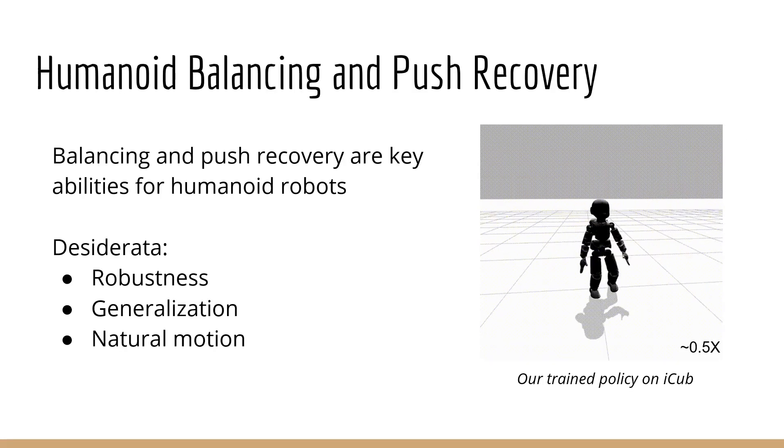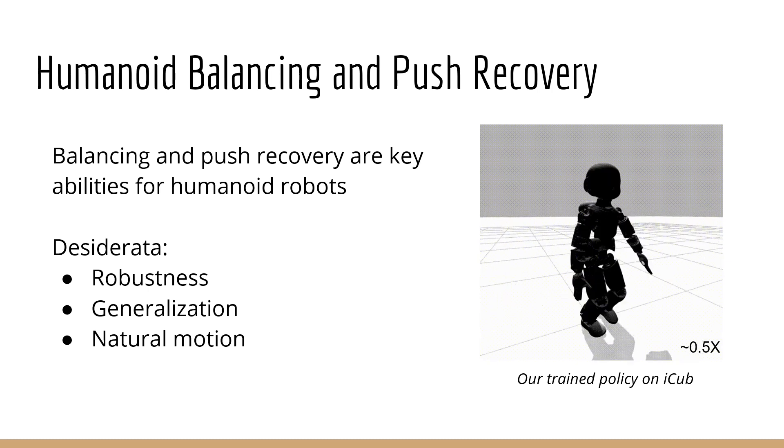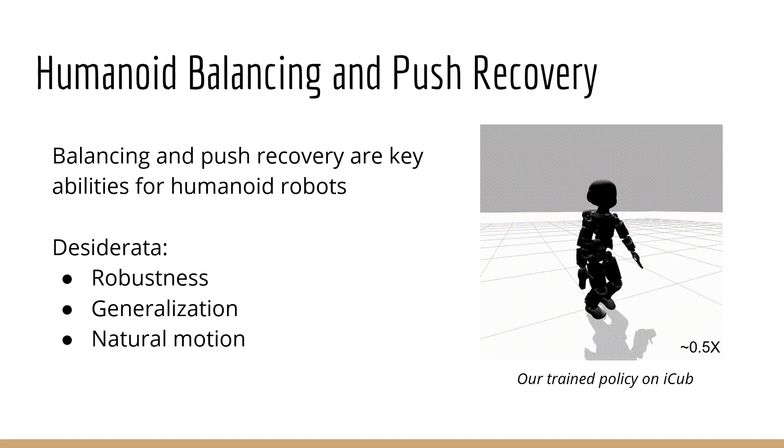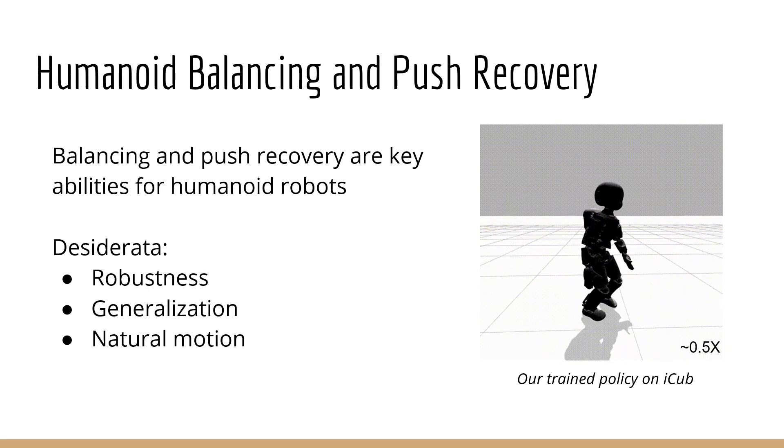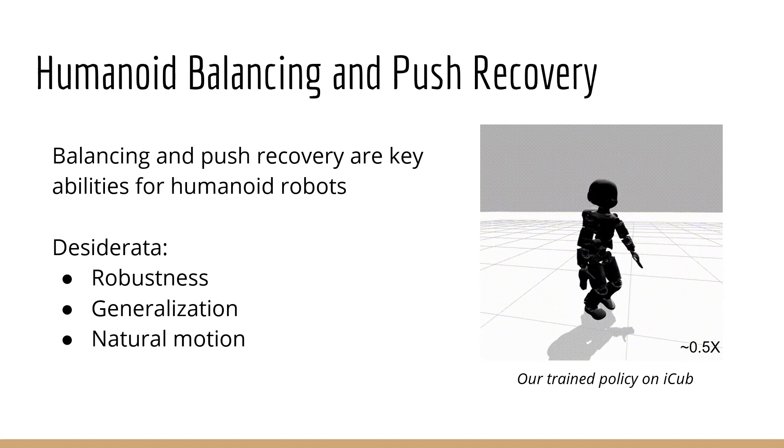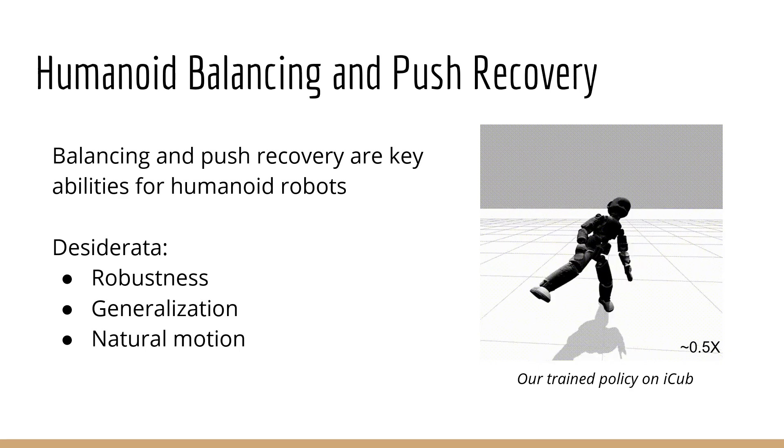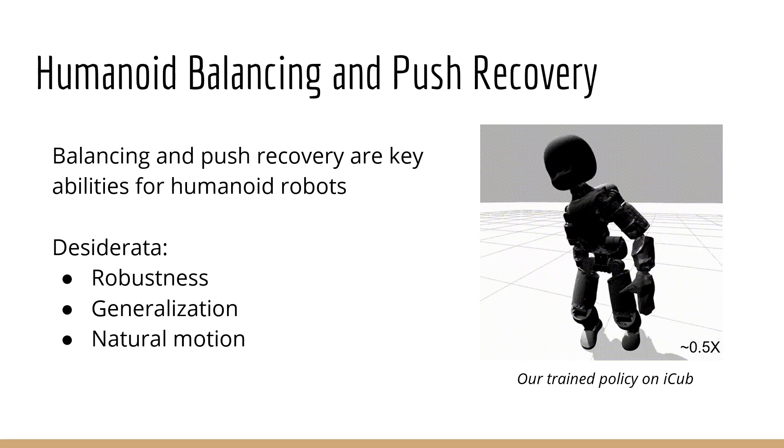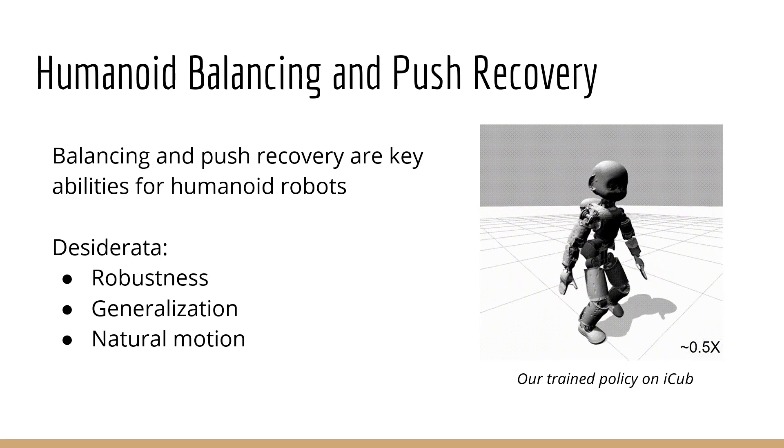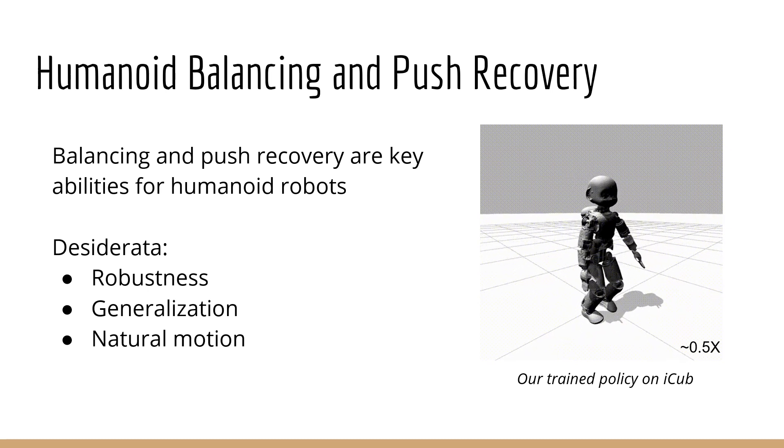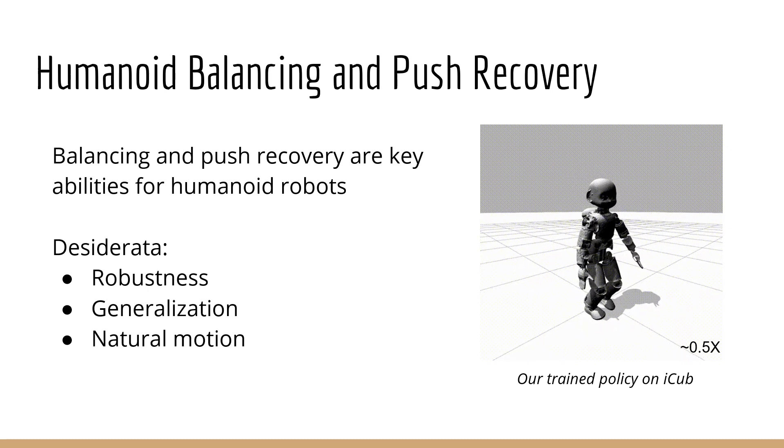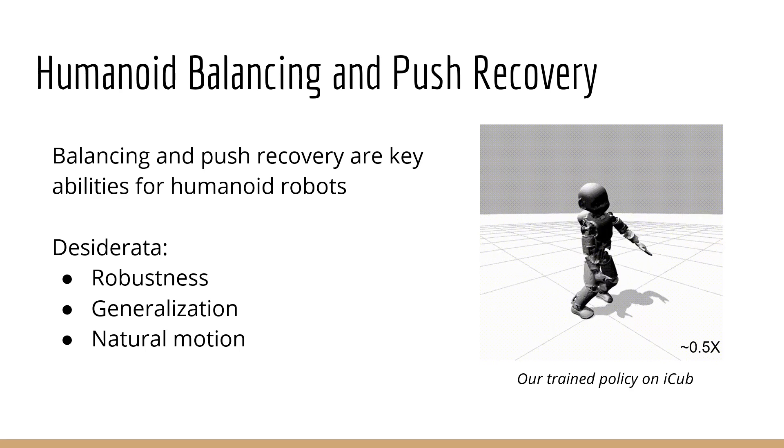Balancing and push recovery are essential abilities for Humanoid robots. They are necessary to support virtually any high-level tasks Humanoids aim to execute. In particular, Humanoids deployed to unstructured and a priori unknown environments are expected to maintain balance robustly and be able to generalize across environments and a range of external perturbations. Exhibiting natural motion and configurations is also a desirable characteristic.